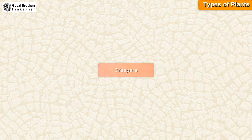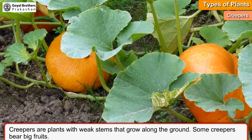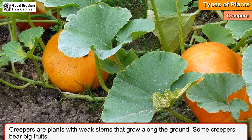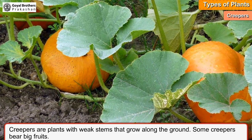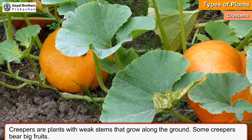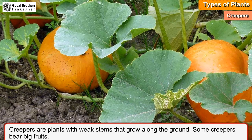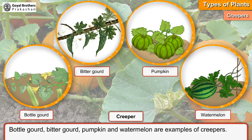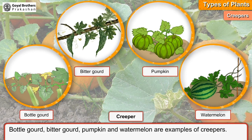Creepers are plants with weak stems that grow along the ground. Some creepers bear big fruits. Bottle gourd, bitter gourd, pumpkin, and watermelon are examples of creepers.